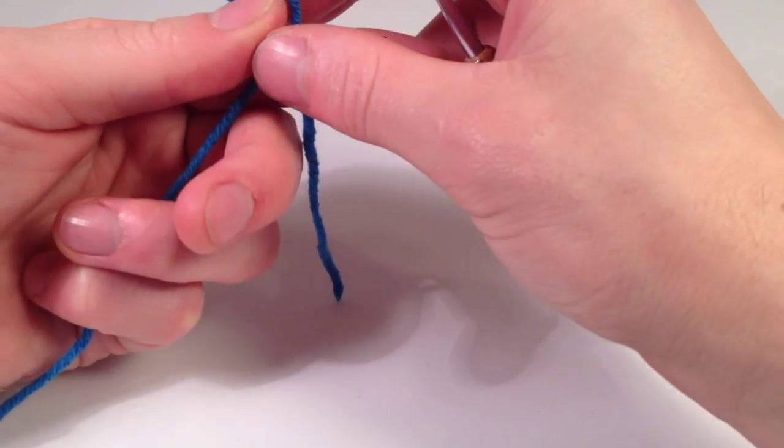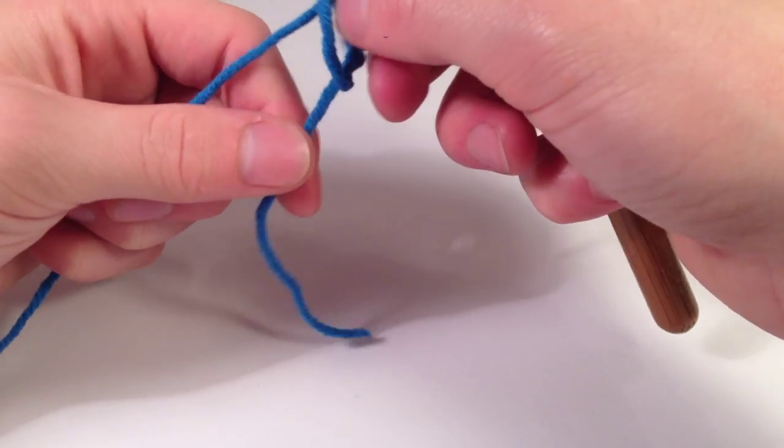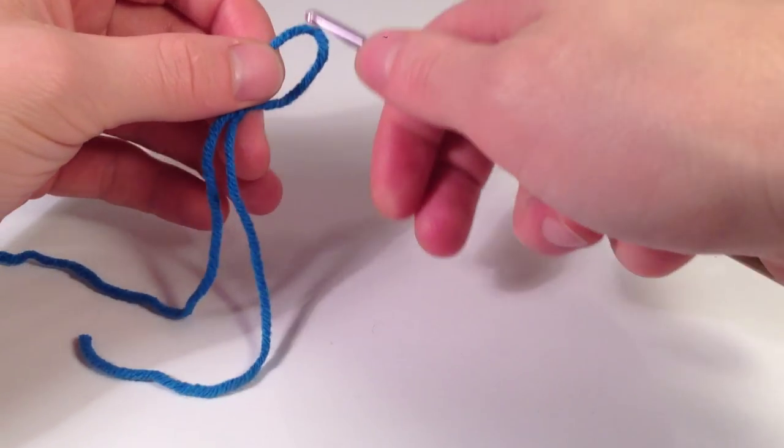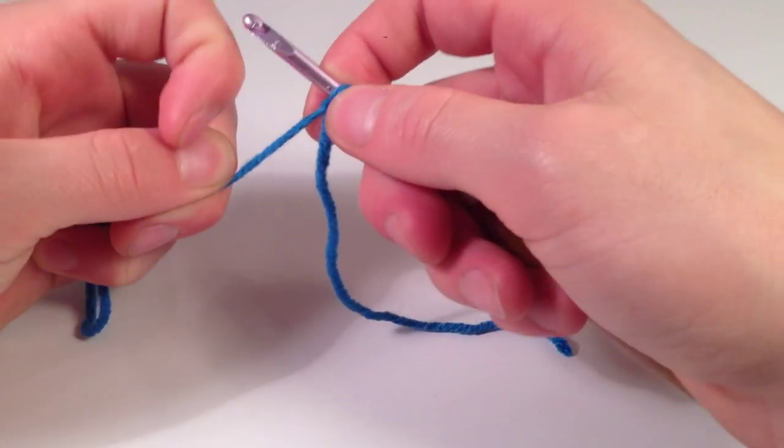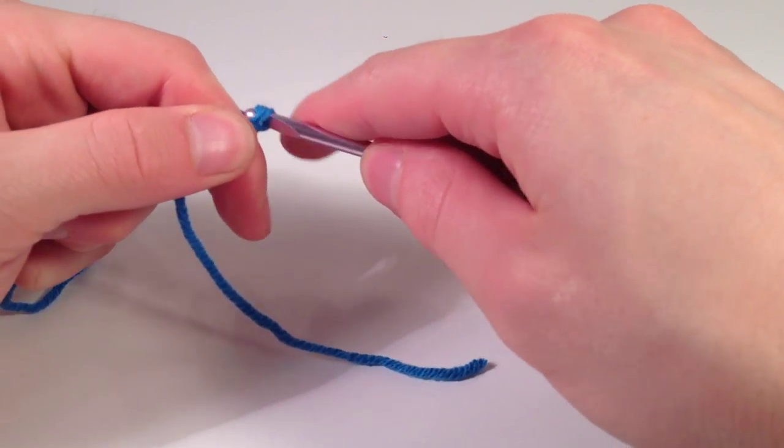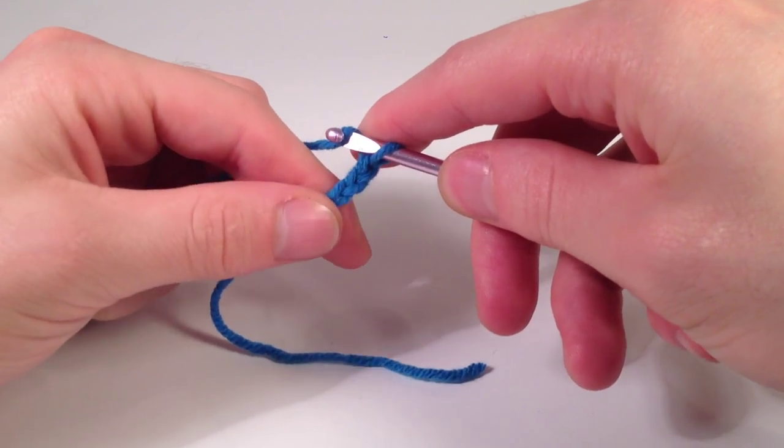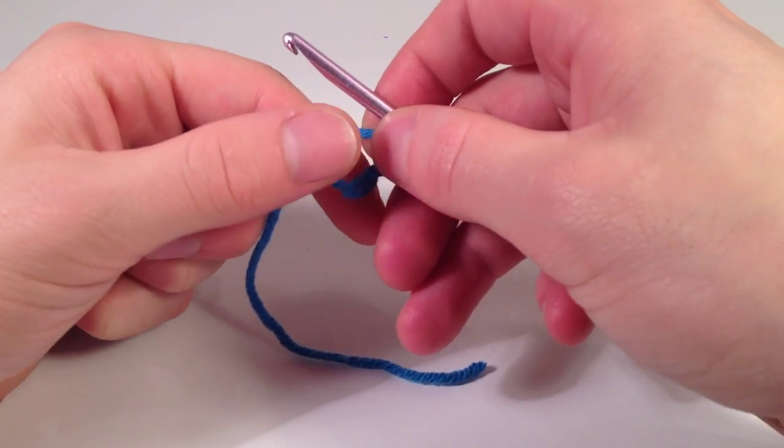Alright, so we make a slip knot and leave a kind of long part because we're going to use that to sew into the back and to tie it in and we're going to just chain four. One, two, three, and four.